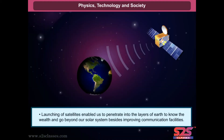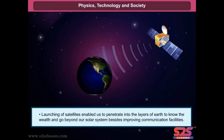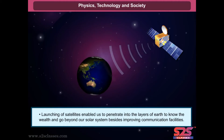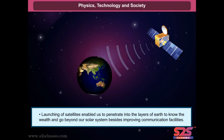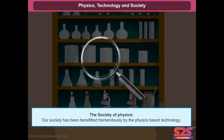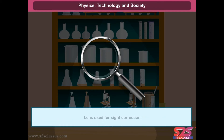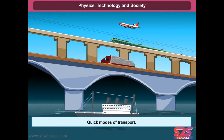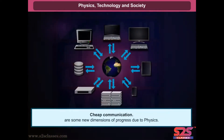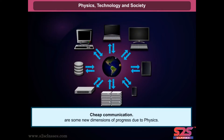Launching of satellites enabled us to penetrate into the layers of earth to know the wealth and go beyond our solar system, besides improving communication facilities. The society of physics. Our society has been benefited tremendously by physics-based technology. Lens used for sight correction, quick modes of transport, and cheap communication are some new dimensions of progress due to physics.